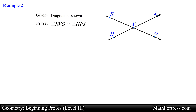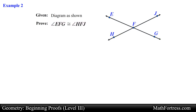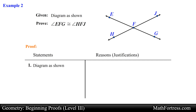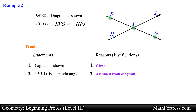Let's illustrate this with the next example. Given the diagram, prove that angle EFG is congruent to angle HFJ. In this problem we are provided with a diagram and are asked to prove that two particular angles are congruent. Since we are provided with a diagram and no other statement is given, we start our proof by writing 'diagram as shown' and the reason is because it was given. Next we need to make an assumption about the diagram. Recall that if three points are collinear then we can assume that they form a straight angle. So the next statement we will make is that angle EFG is a straight angle — the reason is because it is assumed from the diagram.